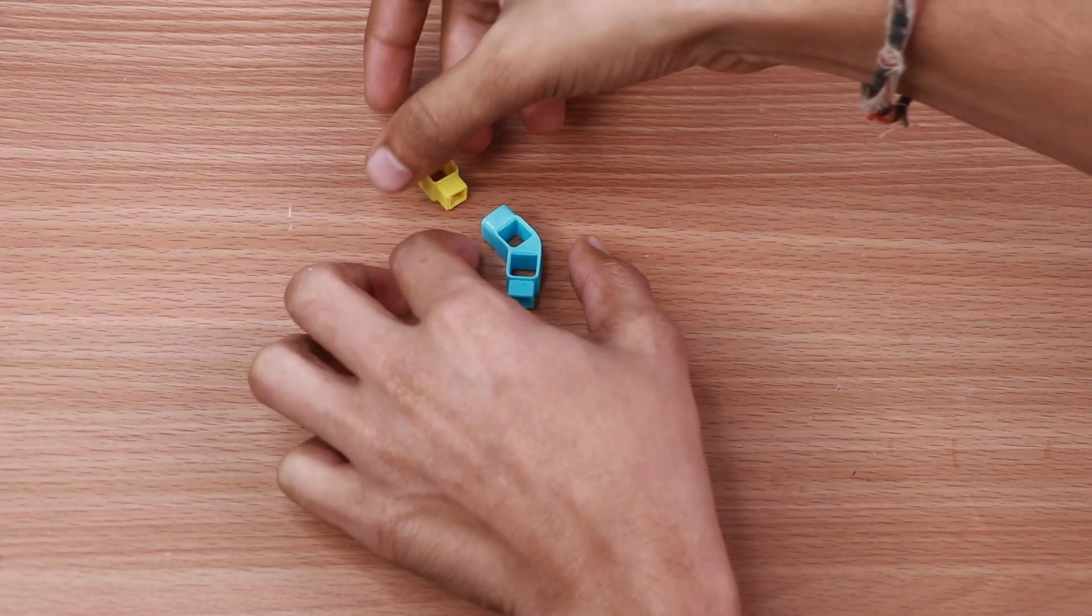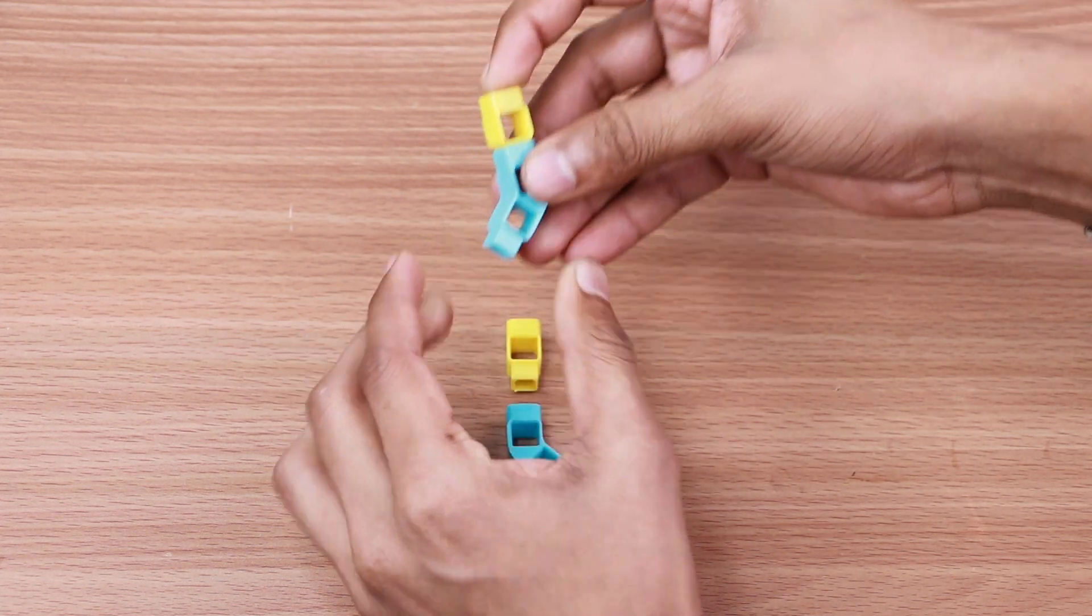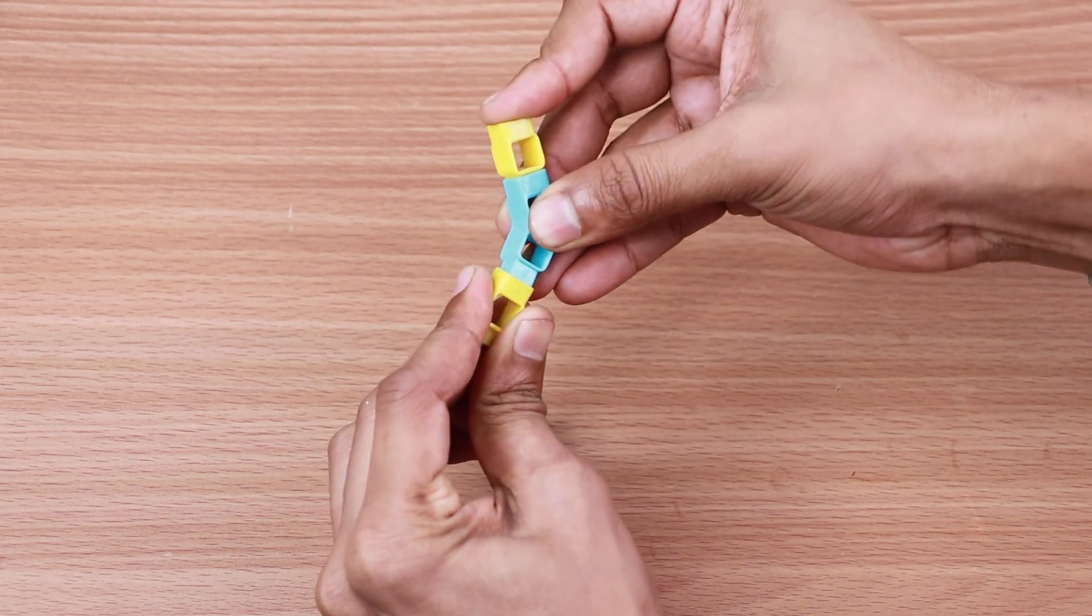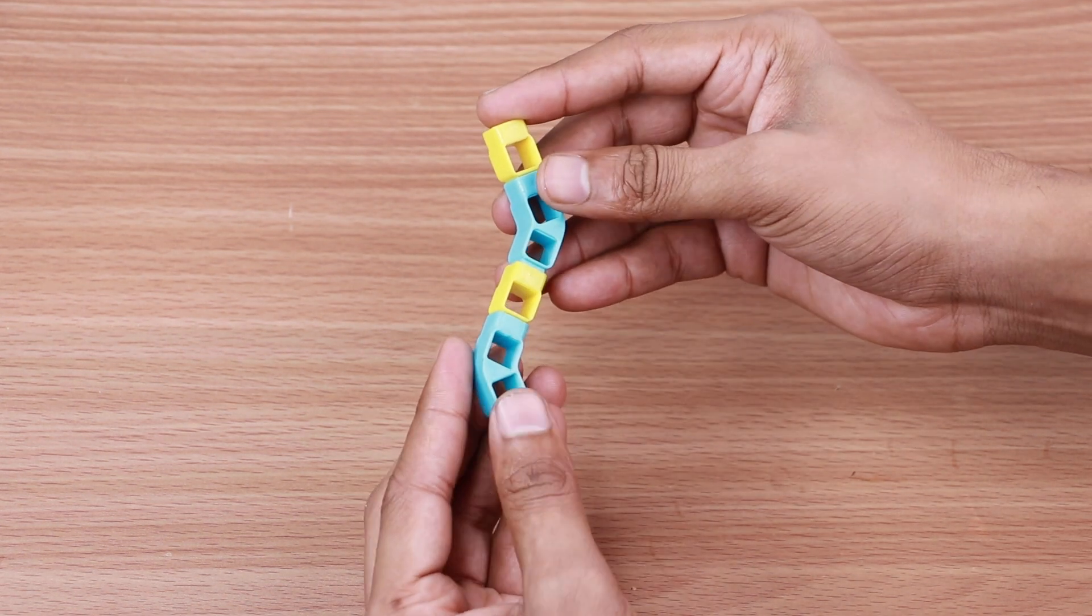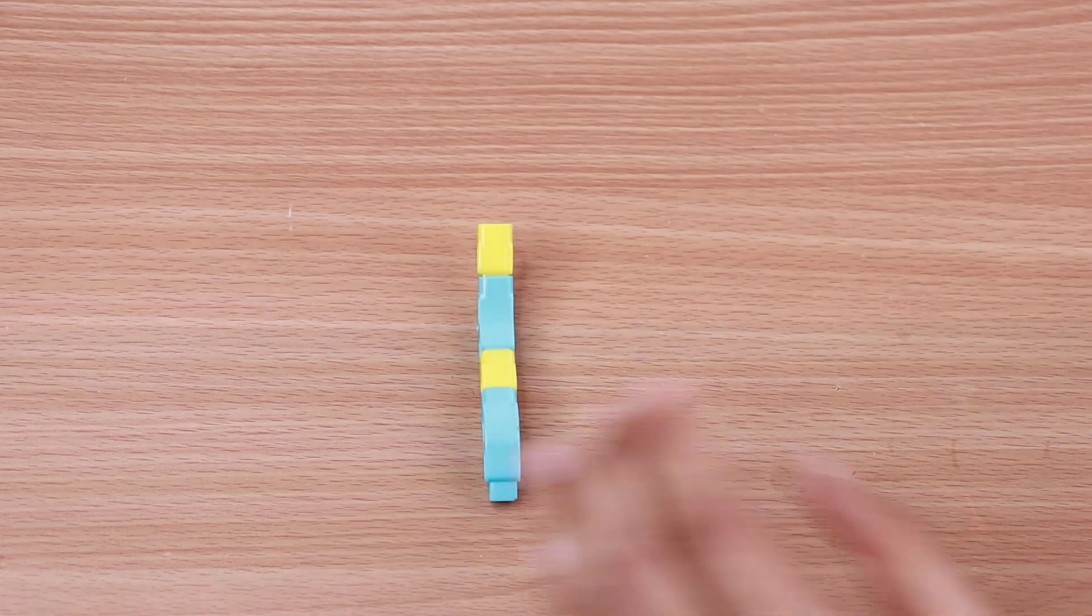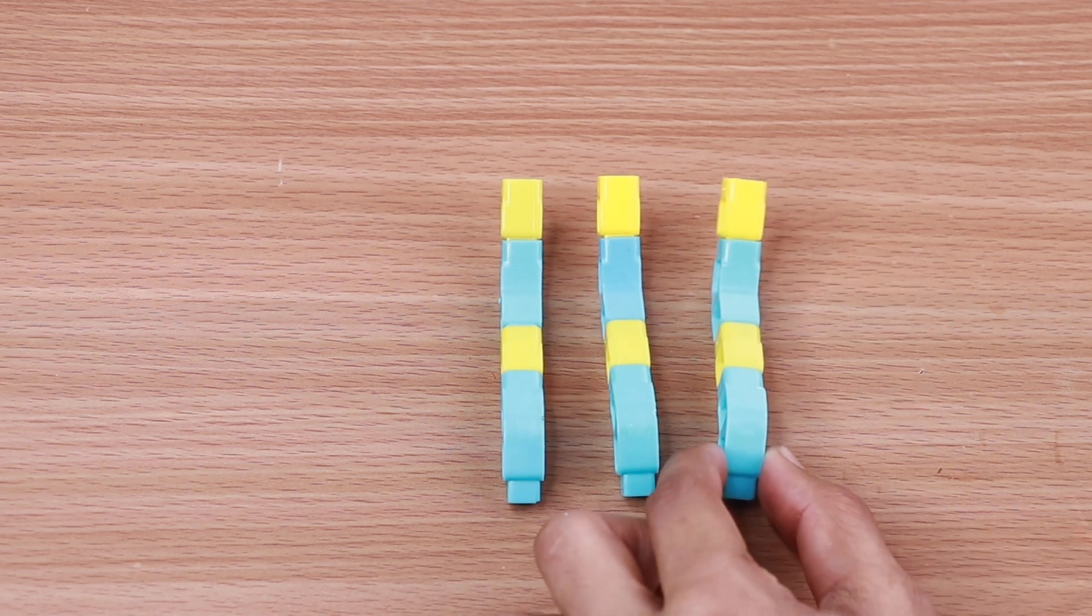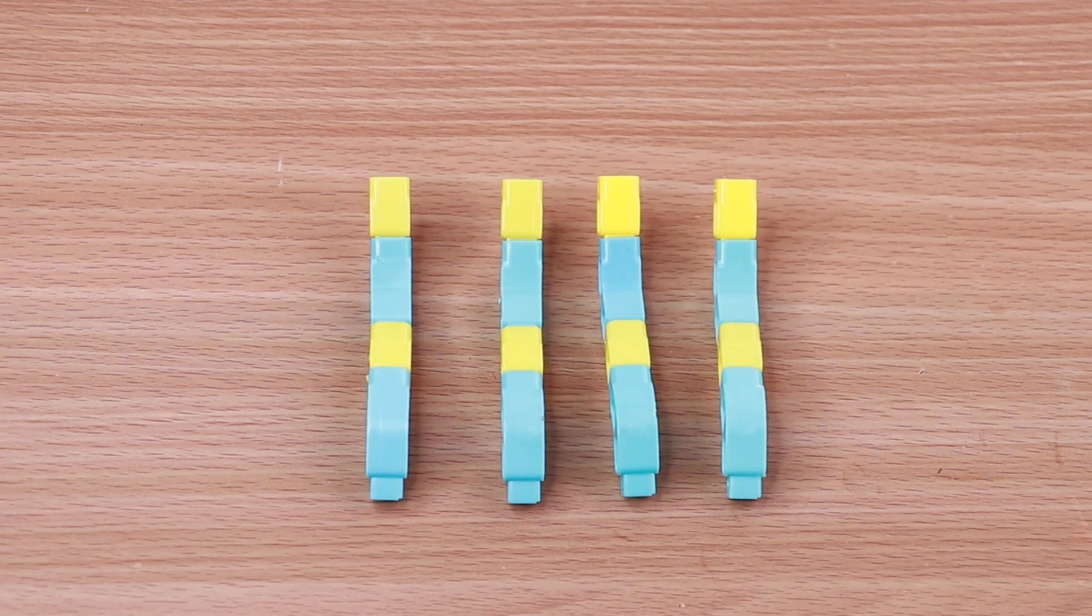Now take 2 2-hole elbows, 2 1-hole beams and join them. Repeat this step 3 times with the same bricks to make 3 more parts like this. These parts will be the fingers.